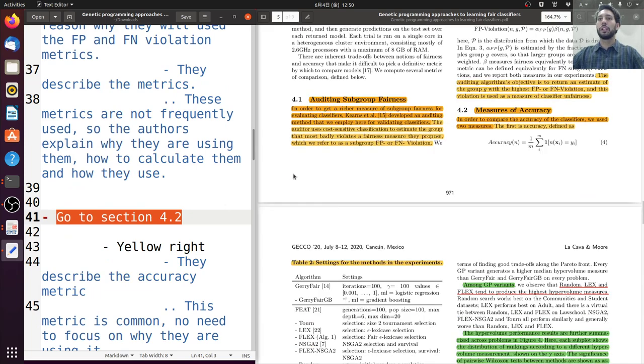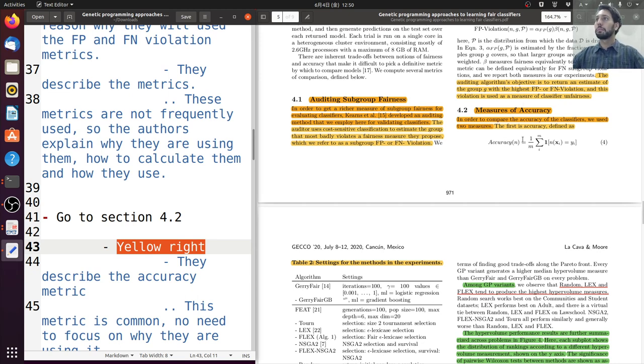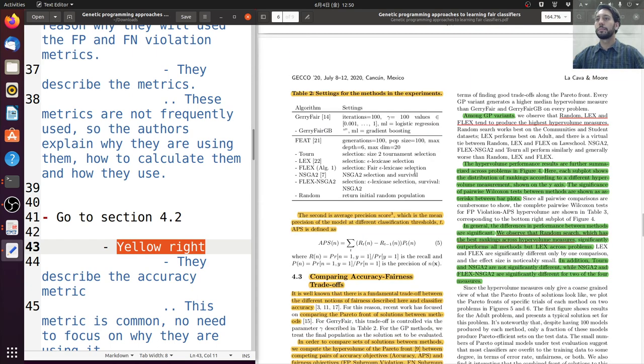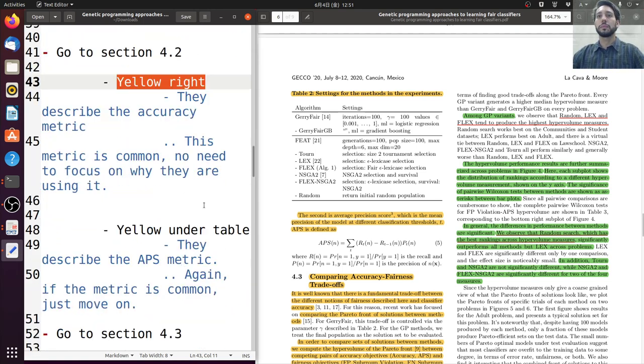So moving on to another group of metrics here in yellow on the right. We have the accuracy. This is a common metric, so there is no much explanation of how does it work. How does it work, or how to calculate and everything. But they still give the reason why they are using it. In order to measure accuracy, they use between, they use two metrics. The first one and the second one. Again, because this is smaller, because these metrics are common, we do a smaller description.